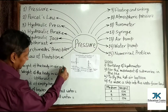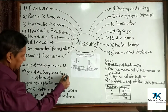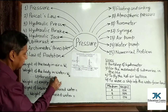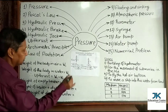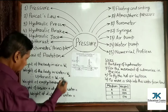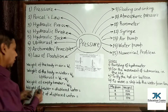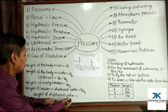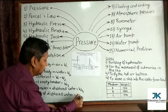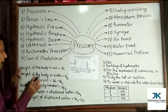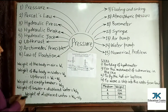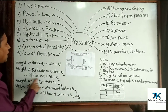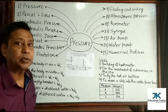Weight of the body in air is W1, and weight of the body in water is W2. Upthrust equals weight of the body in air minus weight of the body in water, so upthrust = W1 − W2. Weight of the empty beaker is W3, and weight of the beaker plus displaced water is W4, so weight of displaced water = W4 − W3. Experimentally, W1 − W2 is found to be equal to W4 − W3. This means upthrust equals weight of displaced water, which verifies Archimedes' Principle, since it states that upthrust equals weight of displaced liquid.